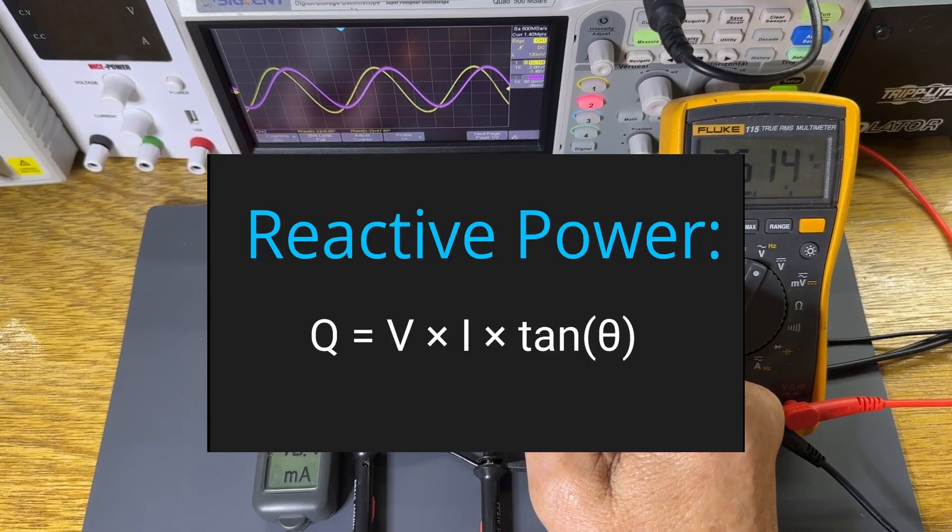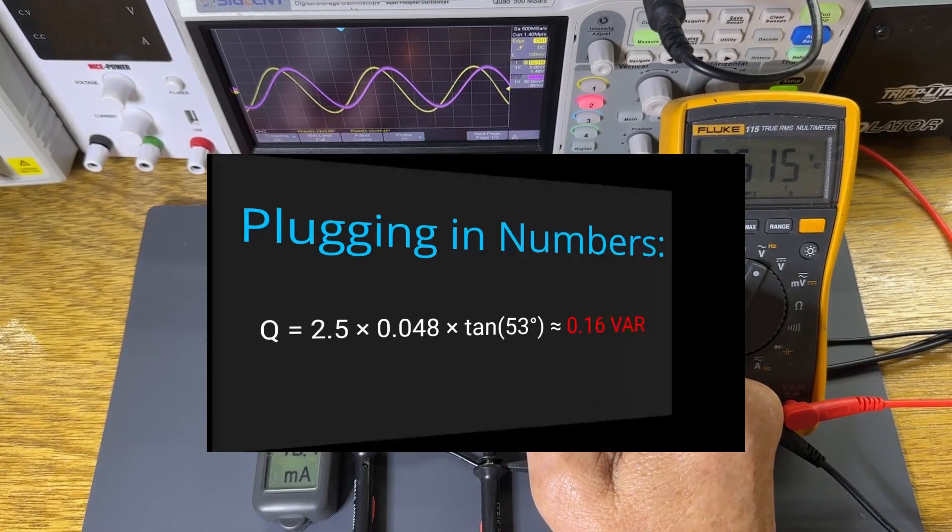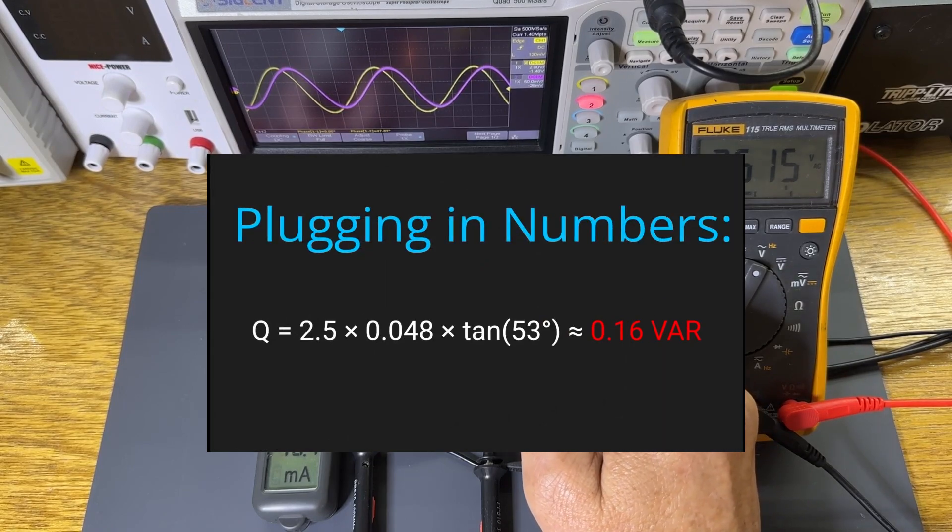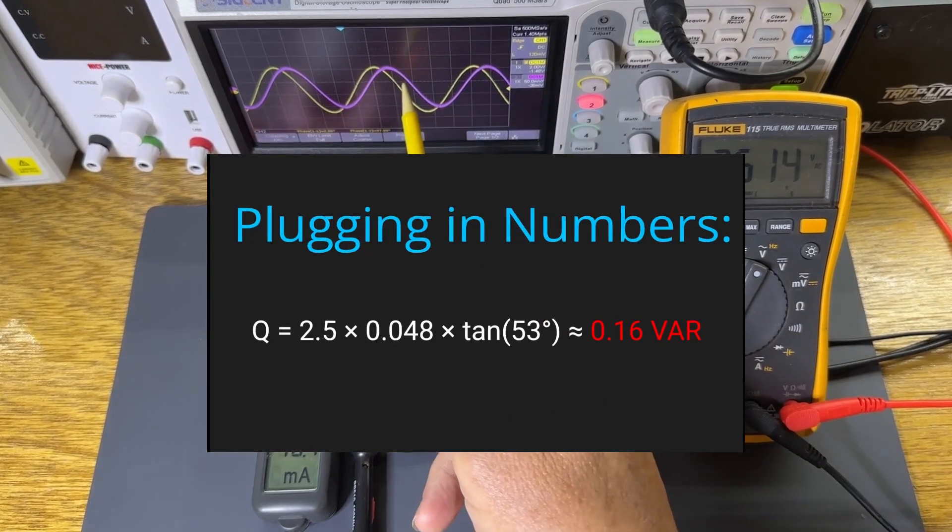This is reactive power. Plugging in our numbers, we get 0.16 VAR, which is reactive power from the inductor that we need to cancel out with our capacitor.